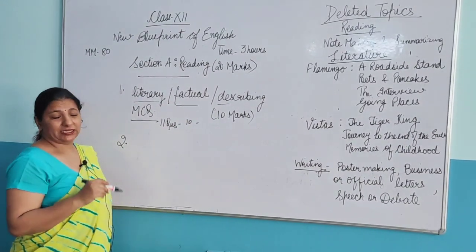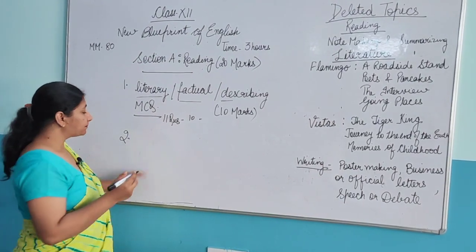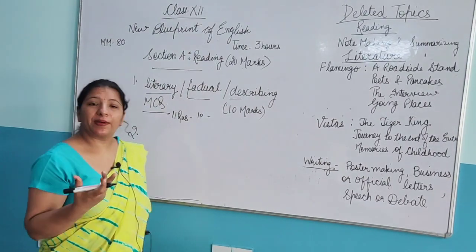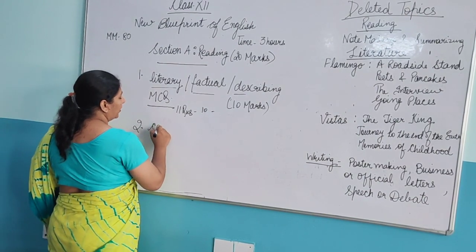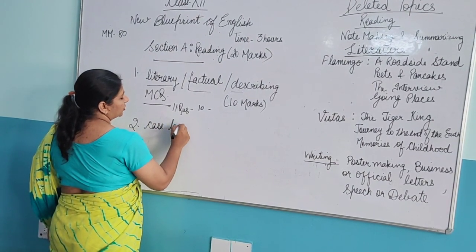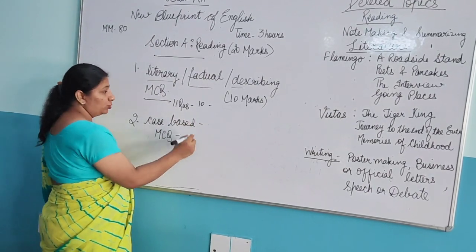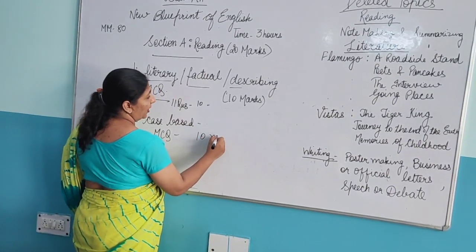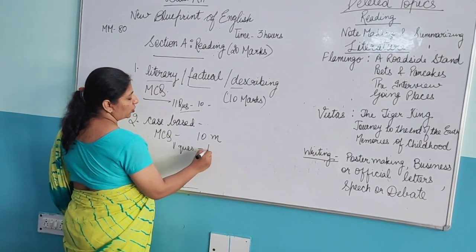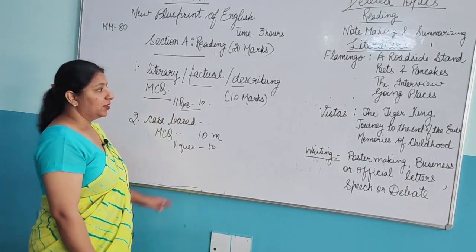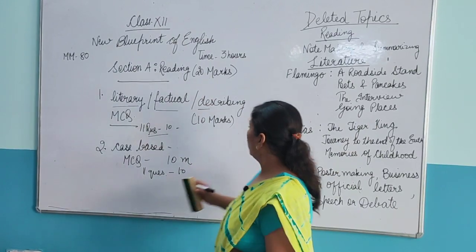The second passage could be a case-based passage — such as newspaper articles or similar content. Again, all MCQs. This will also be of 10 marks, with 11 questions given, and out of those 11 you have to attempt any 10. So total Section A is 20 marks and completely MCQ based.